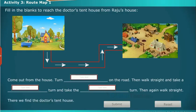Now take up an activity to know the route map. Fill in the blanks to reach the doctor's tent house from Raju's house.